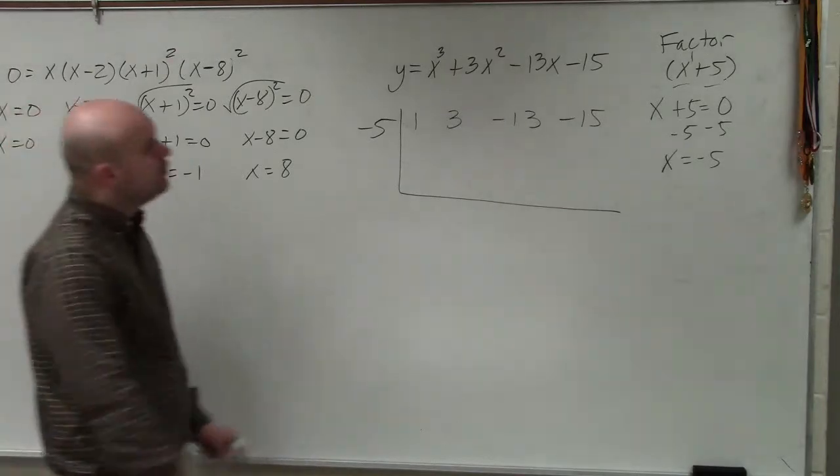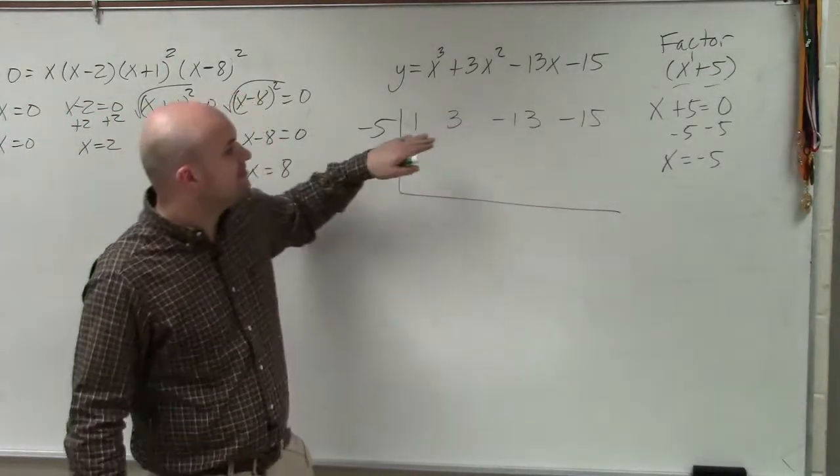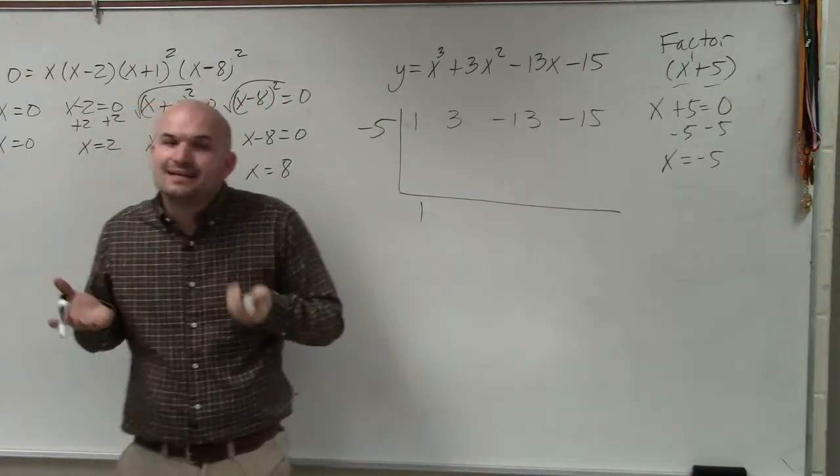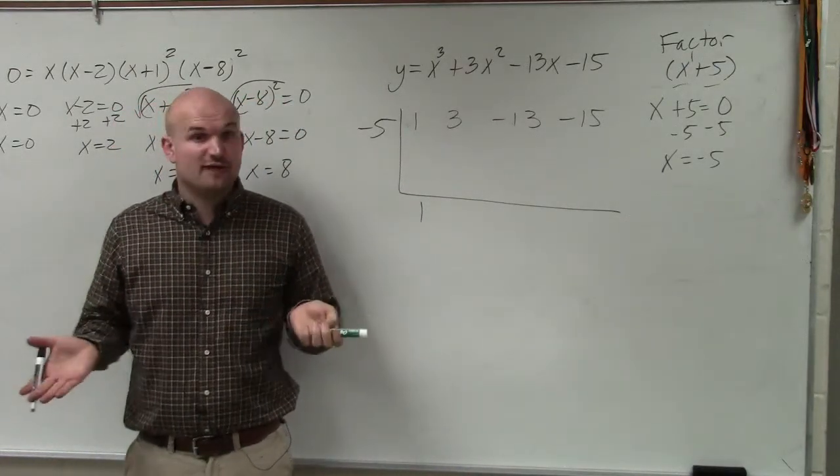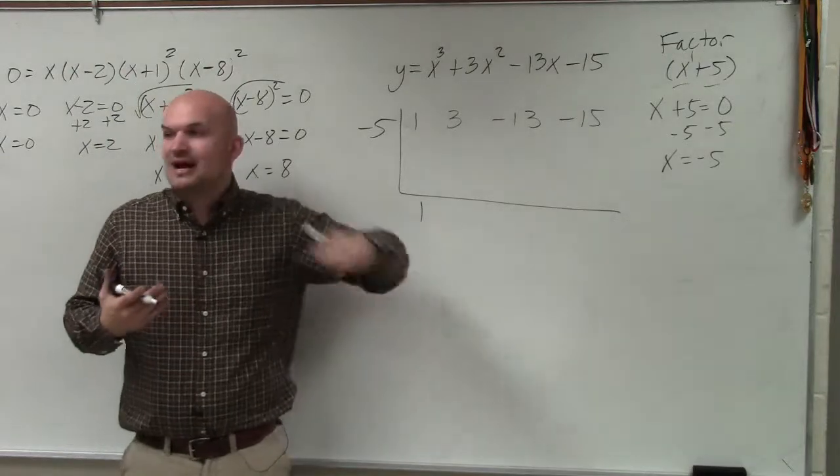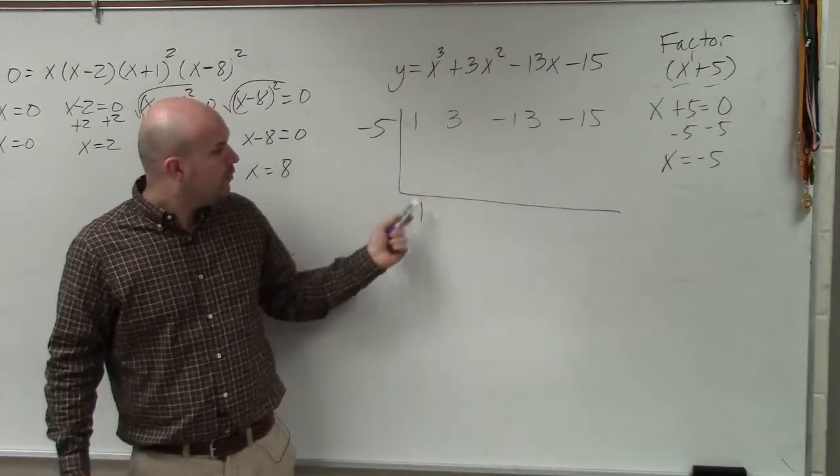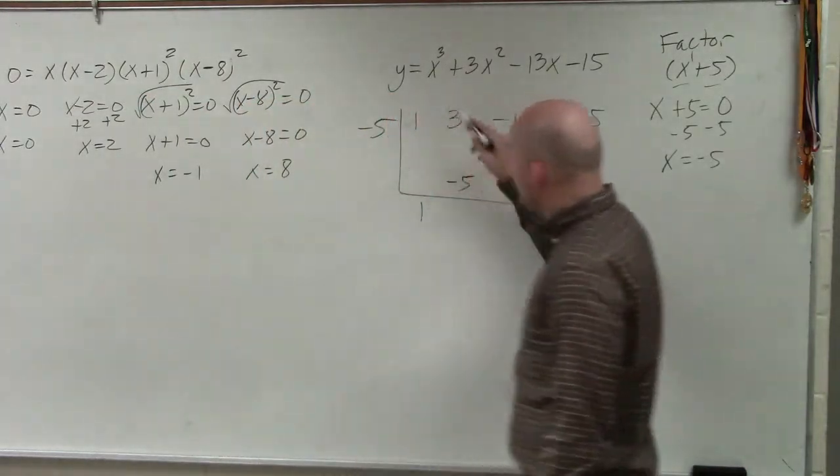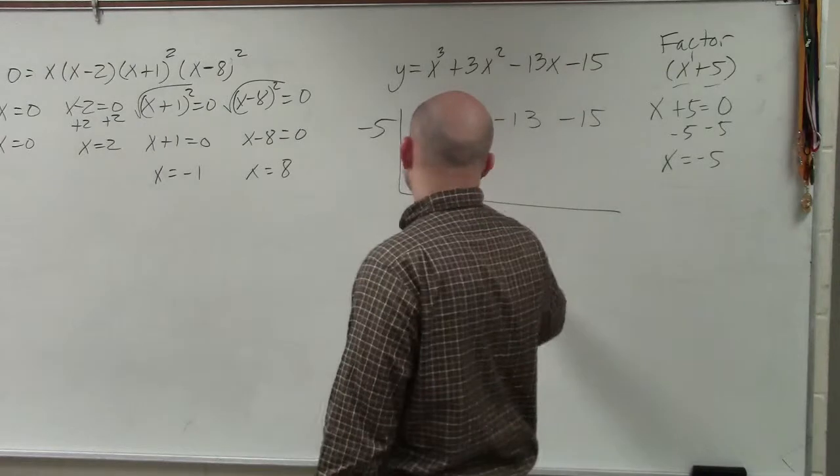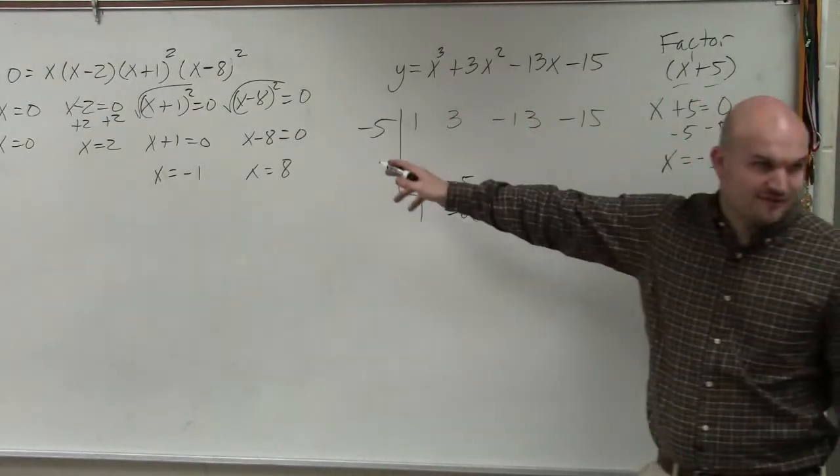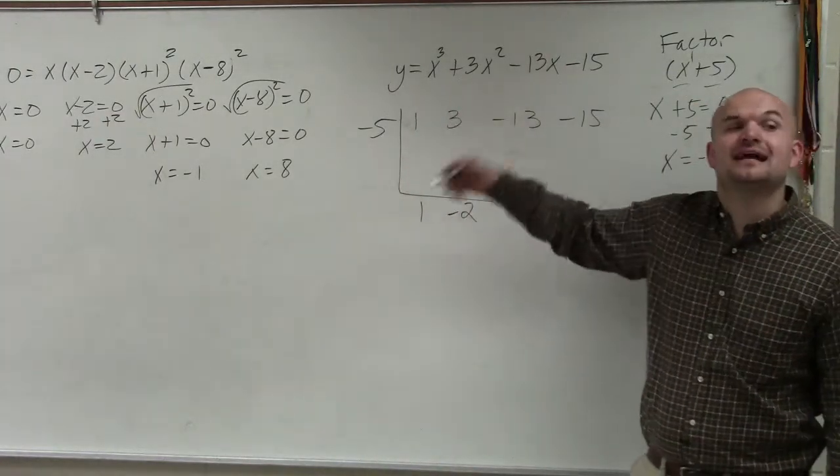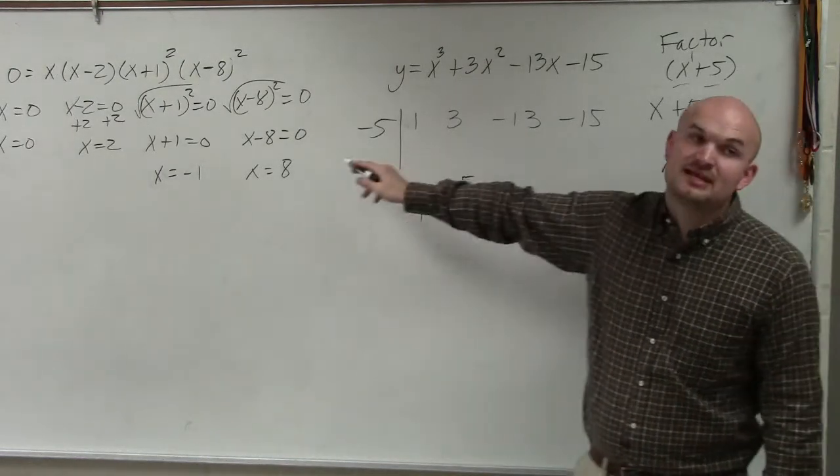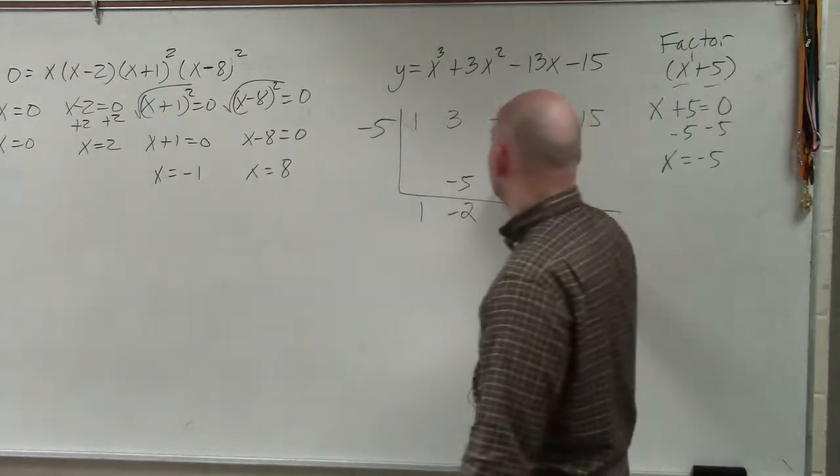So now the rule for this is the first term you bring all the way down, which is a 1. First one is kind of like a freebie. Then we multiply on the diagonals and add on the vertical. 1 times negative 5 is negative 5. 3 plus negative 5 is negative 2. Negative 2 times negative 5 is negative. 3 plus negative 5 is negative 2. I said negative 2 too soon.